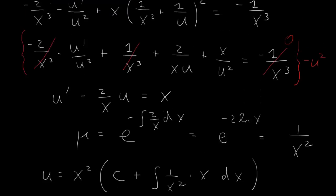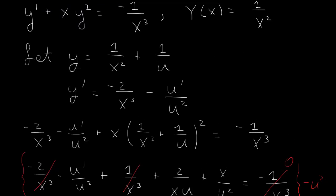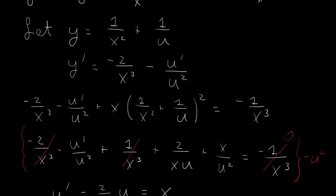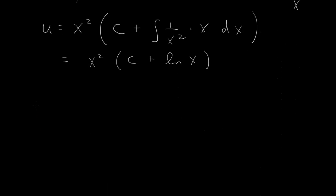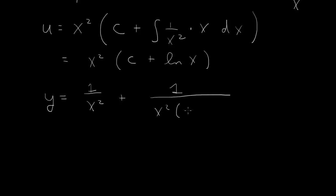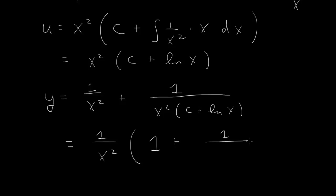Then we go back to y. We have y equals 1 over x squared plus 1 over u. So 1 over u is x squared over the quantity c plus log x. Therefore y equals 1 over x squared times the quantity 1 plus 1 over the quantity c plus log x.